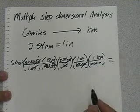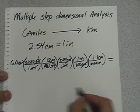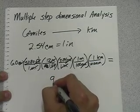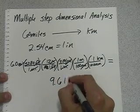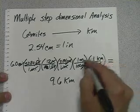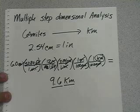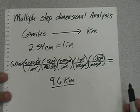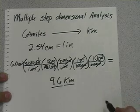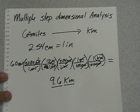Now this all comes out to, if we punch it out, 9.6 kilometers. And if you calculate it out on your calculator, that's what you'll get. So that's multiple step dimensional analysis.